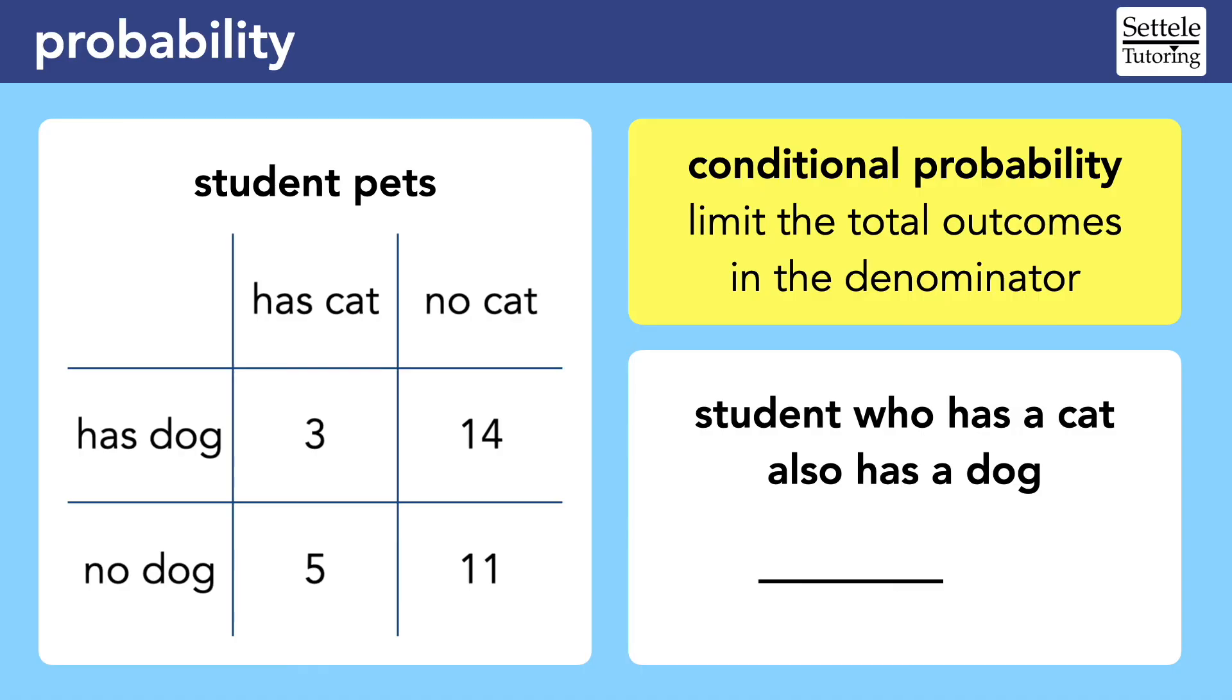In this next example, I've changed the question very slightly, but it will completely change the answer. In this case, we're looking for the probability that a student who has a cat also has a dog. This time the denominator is limited to people who have a cat, which is a total of 3 plus 5. The numerator stays the same because we're still looking for a student who has both a cat and a dog. Notice that once again we have a large circle for the denominator and a smaller circle inside of it for the numerator. The overall probability would be 3 eighths.